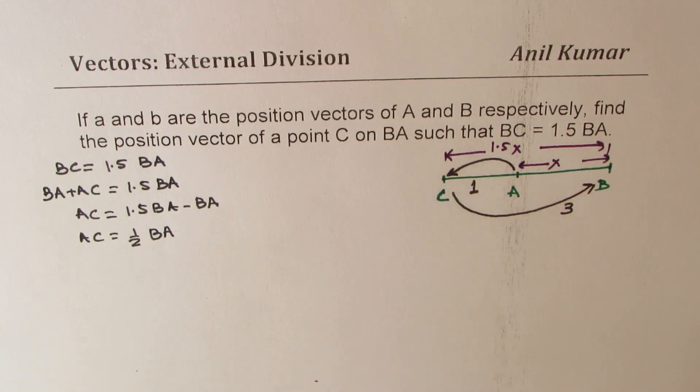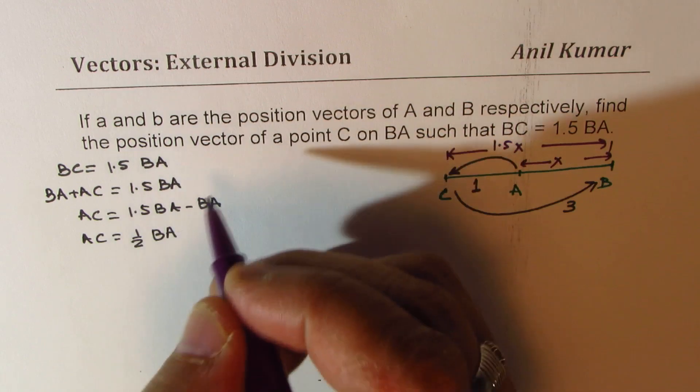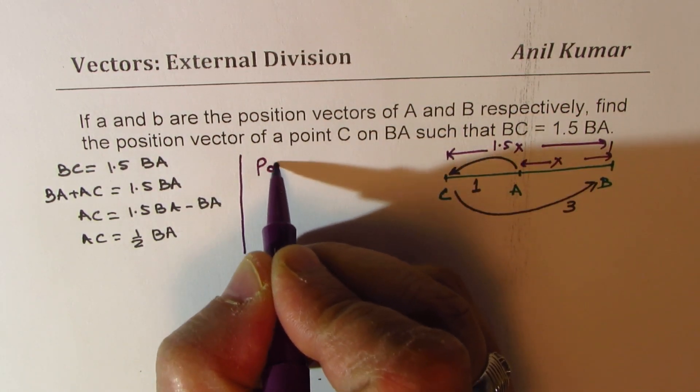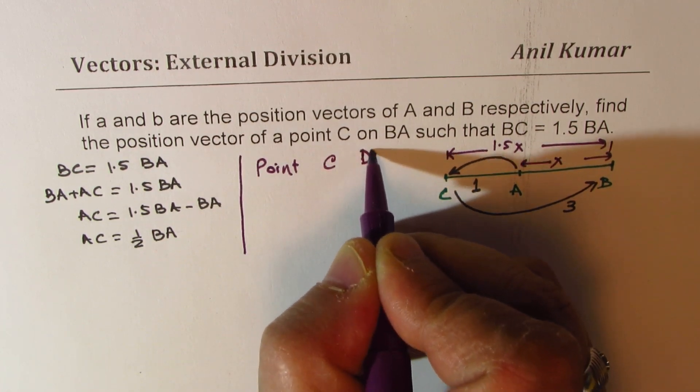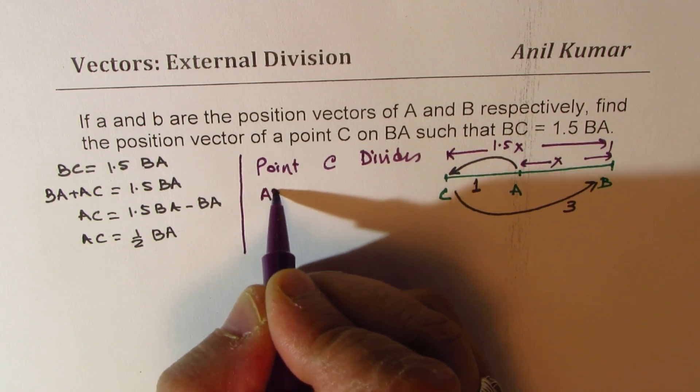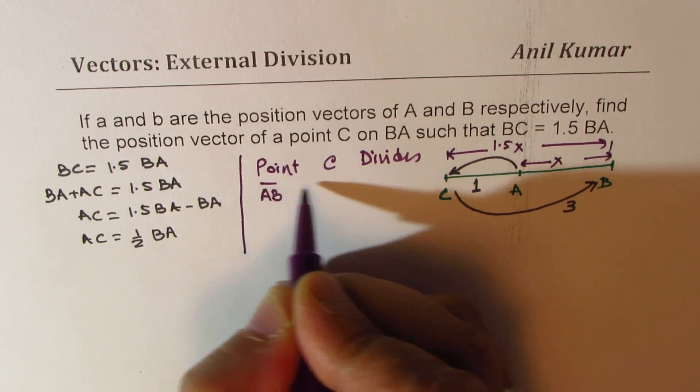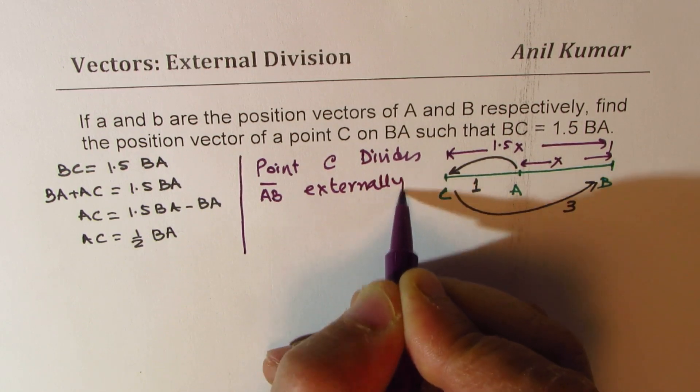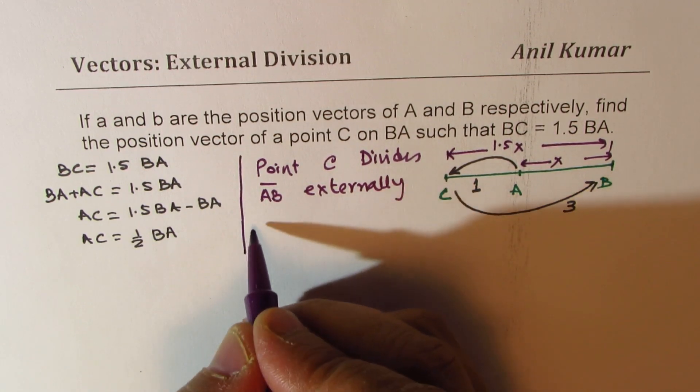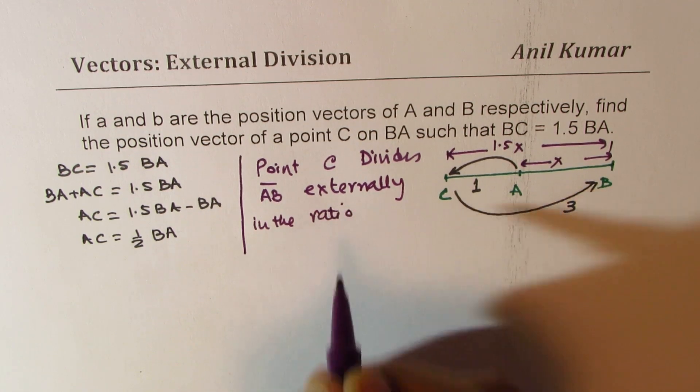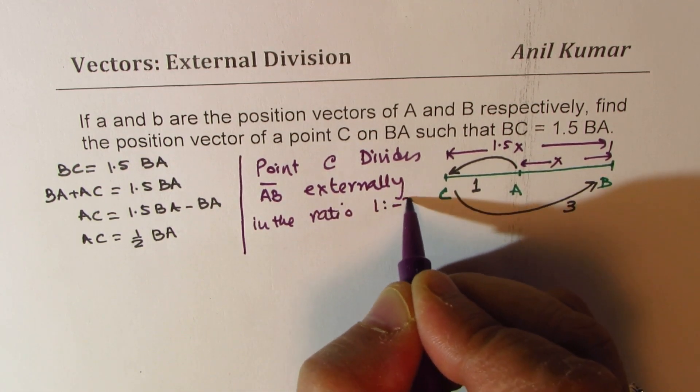So you could also see that point C is externally dividing AB in the ratio of 1 is to minus 3. So from here, you could conclude that point C divides AB externally in the ratio 1 is to minus 3.